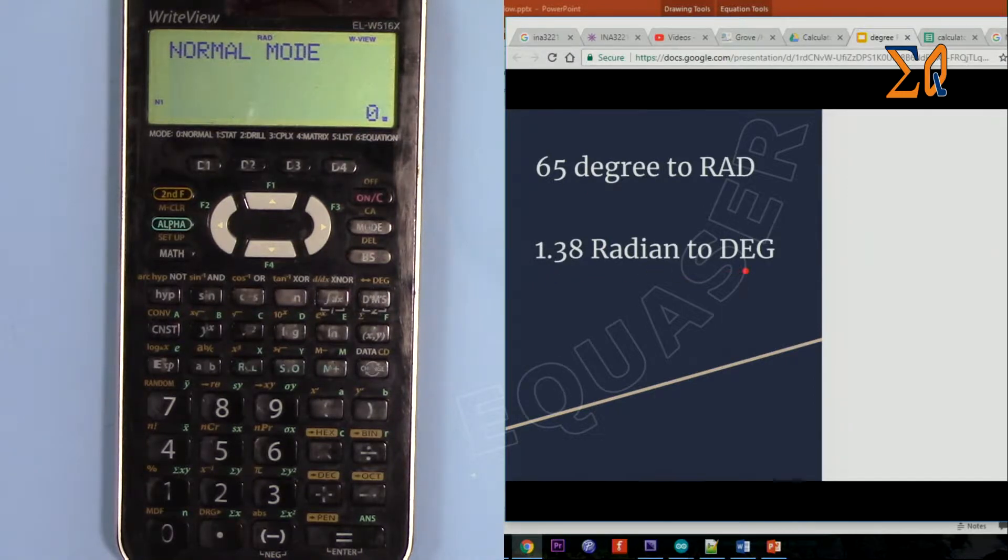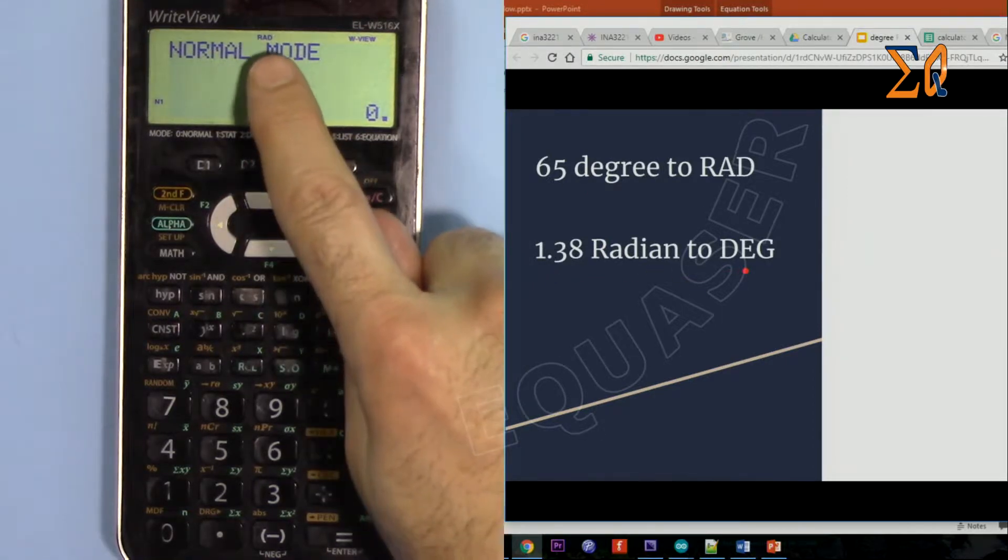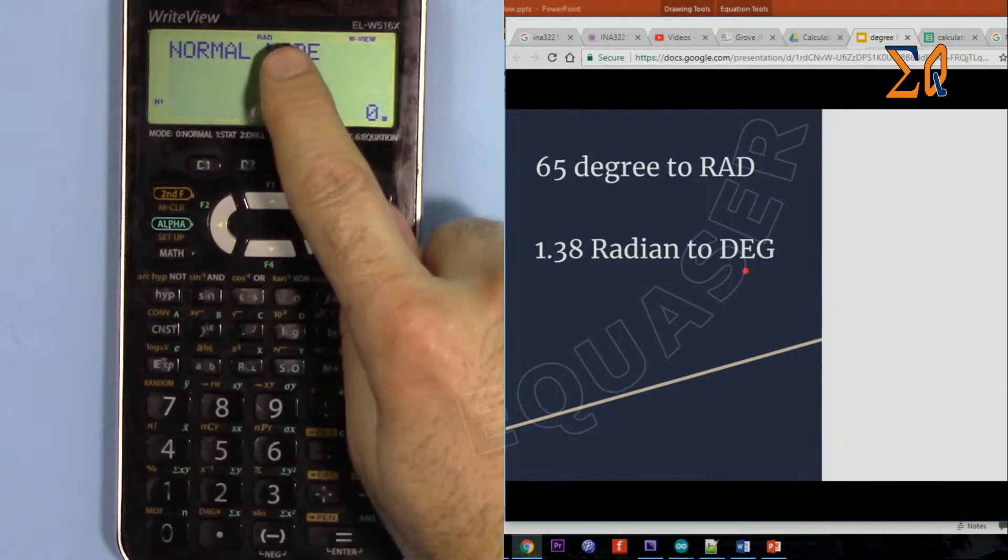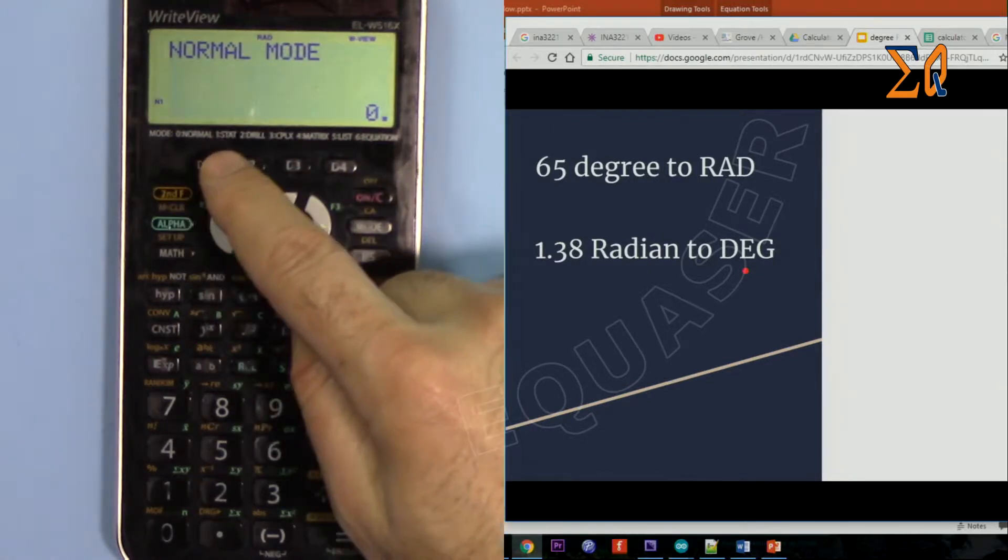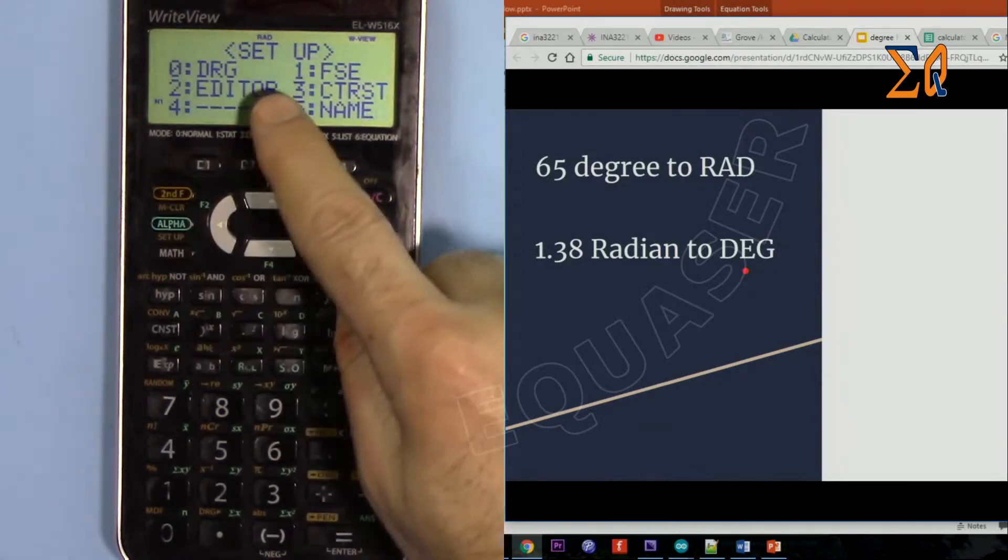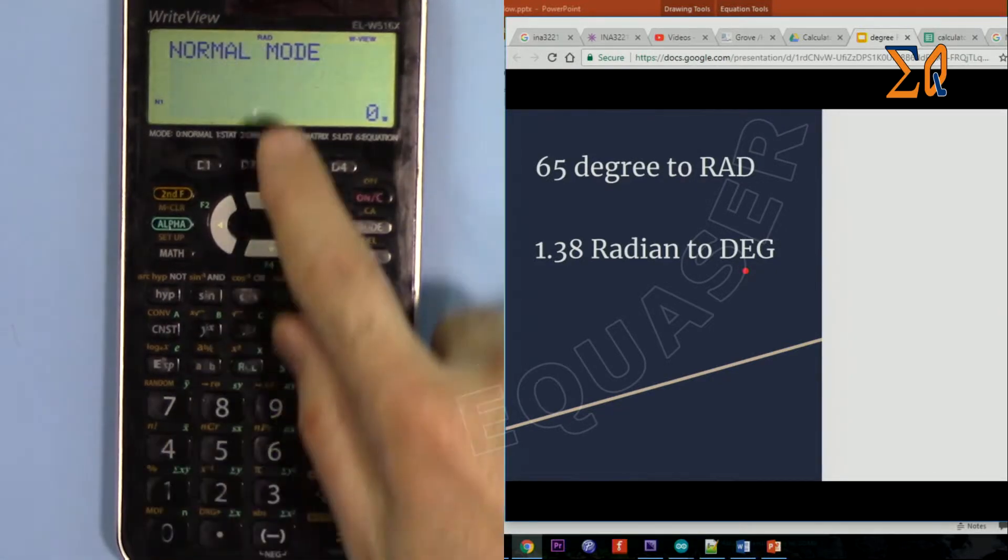Let's say you have 1.38 radian to degree. Now the calculator has changed to radian automatically when you convert to a value, it will be radian. If not, you have to go through the same step: second function, math, zero, and then one radian.